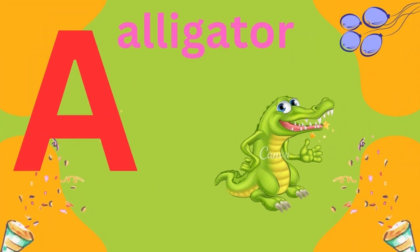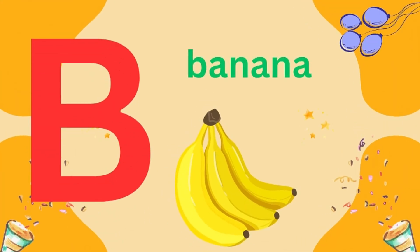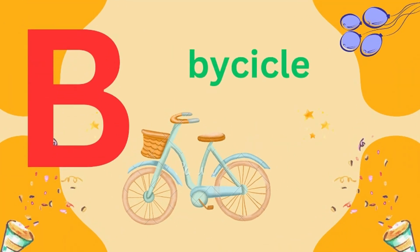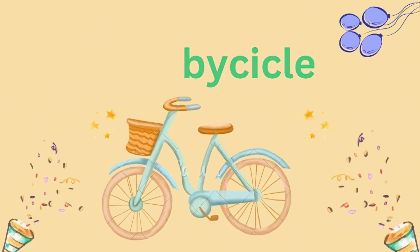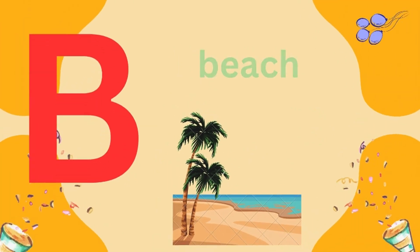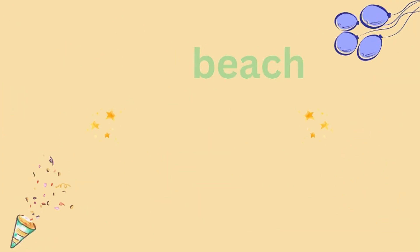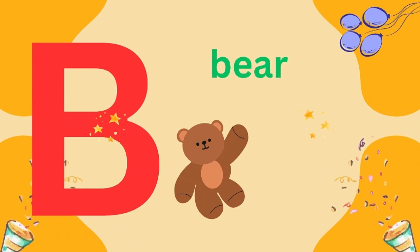I is for alligator. V is for banana. V is for bicycle. V is for beach. V is for bear.